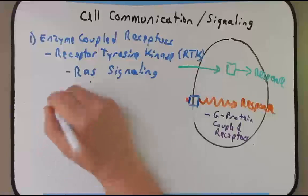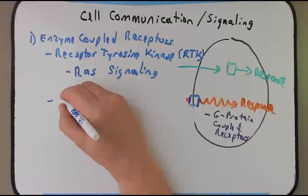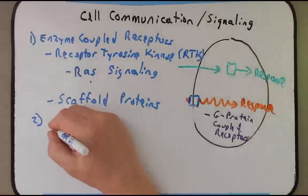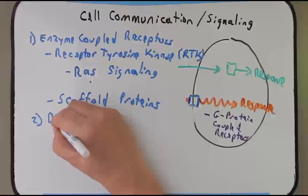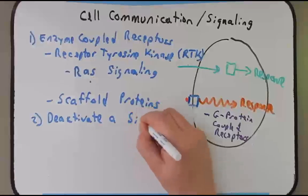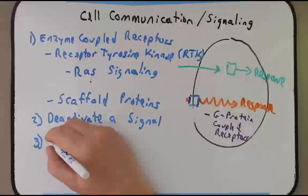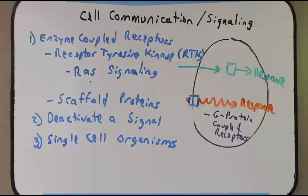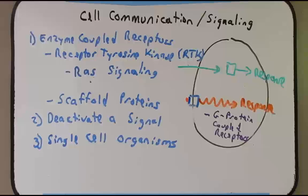In talking about enzyme coupled receptors we'll discuss the importance of scaffold proteins. We'll also revisit how we deactivate a signal, which we mentioned in the last podcast. The last thing we're going to talk about will be single cell organisms and how they communicate — in lab we've spent a lot of time talking about yeast, which is a single cell eukaryote. Okay, so let's get started with enzyme coupled receptors and receptor tyrosine kinases.